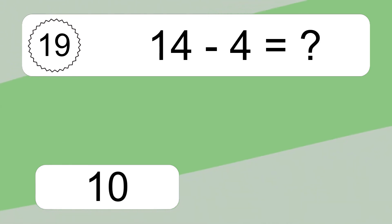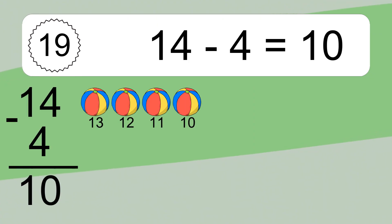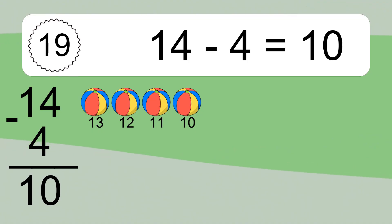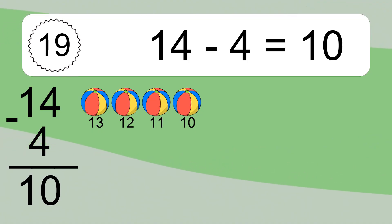14 minus 4 equals what? 14 minus 4 equals 10. Let's count it: 13, 12, 11, 10.